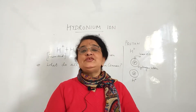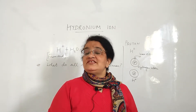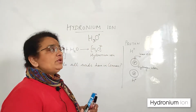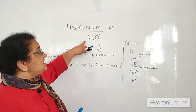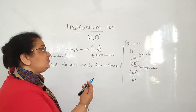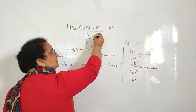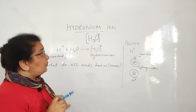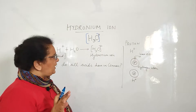Hello everyone, today we will discuss what is a hydronium ion. In very simple terms, hydronium ion is H3O with a positive charge on it. This is a very important question that comes up: what is a hydronium ion?